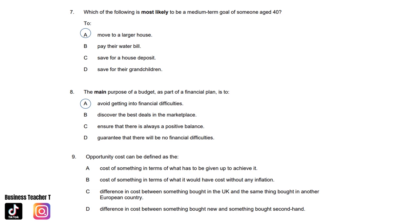Question nine: Opportunity costs can be defined as the: A. Cost of something in terms of what has to be given up to achieve it. B. Cost of something in terms of what it would have cost without any inflation. C. Difference in cost between something bought in the UK and the same thing bought in another European country. Or D. Difference in cost between something bought new and something bought second hand. And the answer is A. Cost of something in terms of what has to be given up to achieve it.